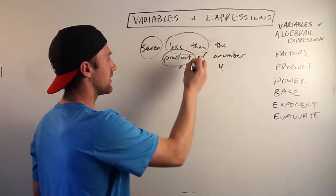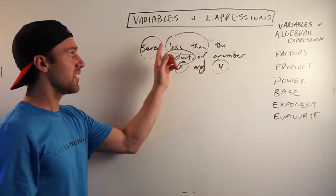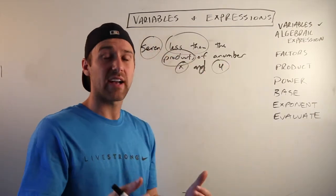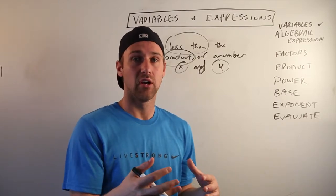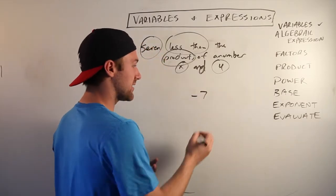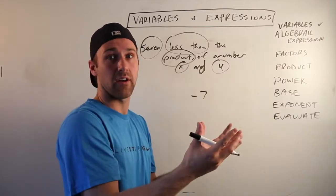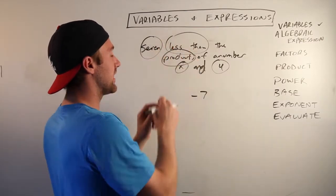Seven less than - that means you're going to subtract seven from whatever you're doing here. So we can go ahead and put that down, minus seven. We don't know it's probably going to go here, but it might go here. We're just going to figure it out. Seven less than - less than means you're taking it away, so therefore it's subtraction.